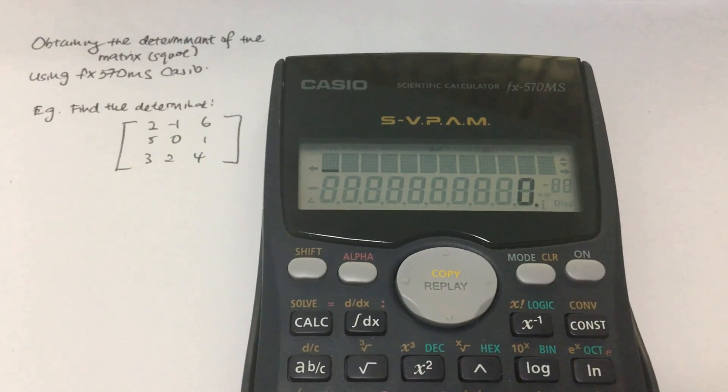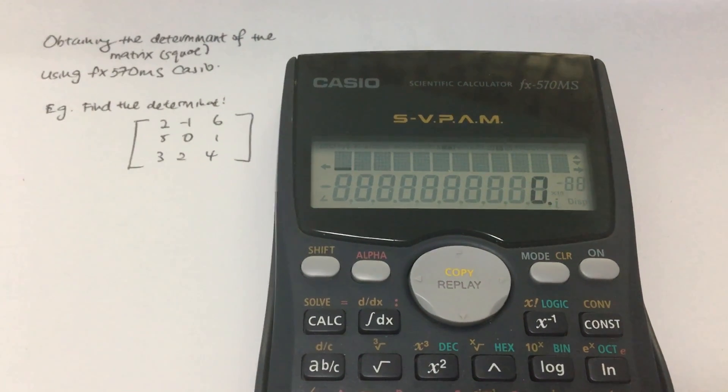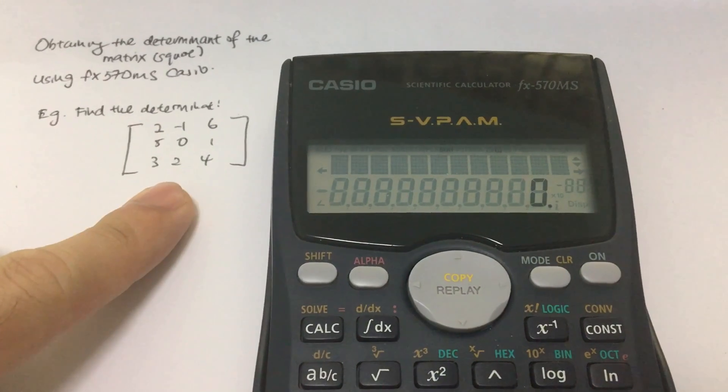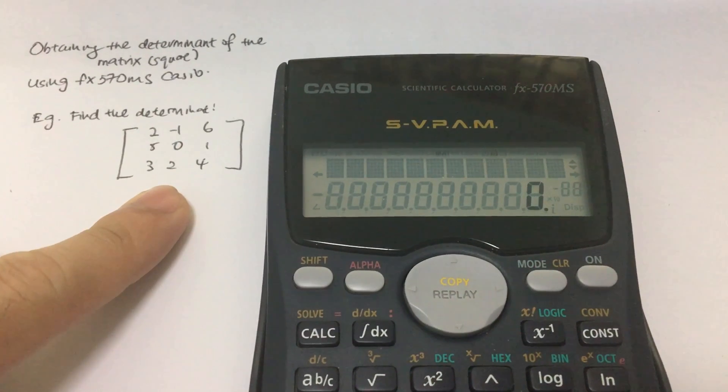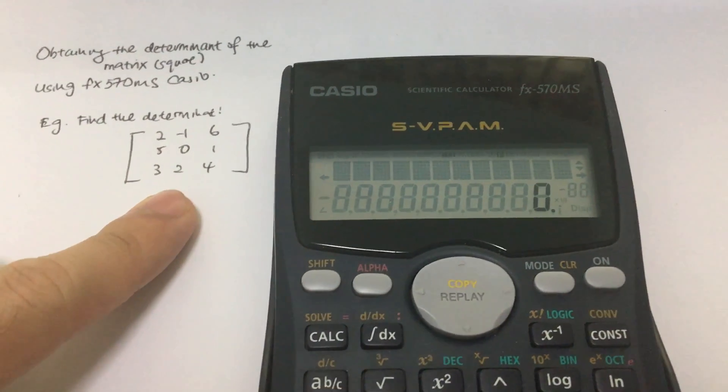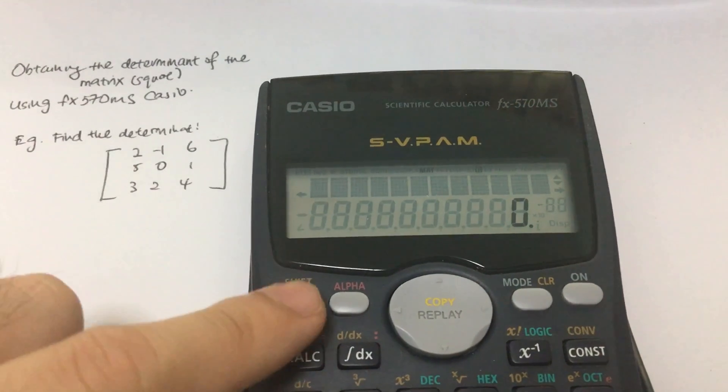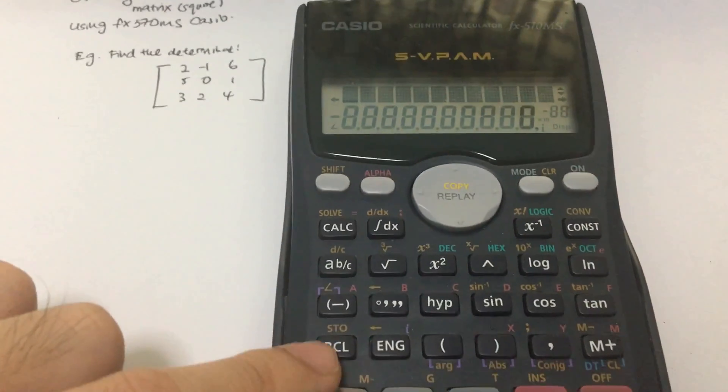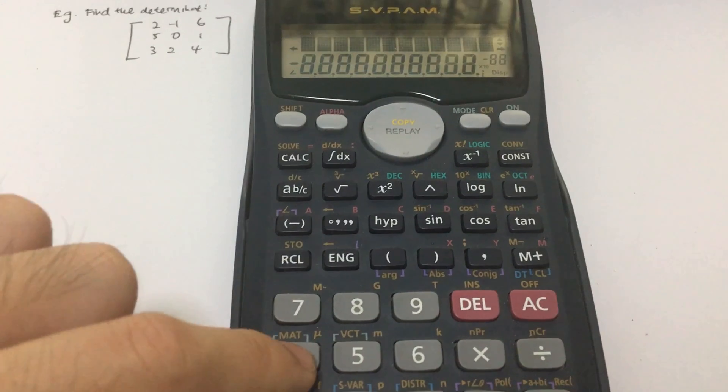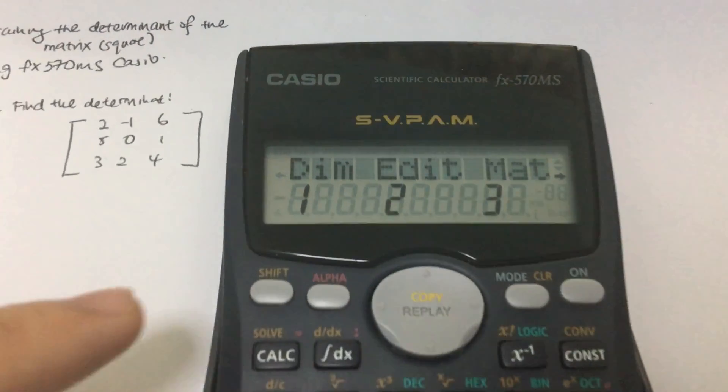Well, the next thing you have to do is to set the dimension of this matrix itself. So we know that this dimensional matrix is a three by three matrix. So how do we set the dimension? We can actually click on shift and click on this mat function down here. Just click on it and then you will see this option.